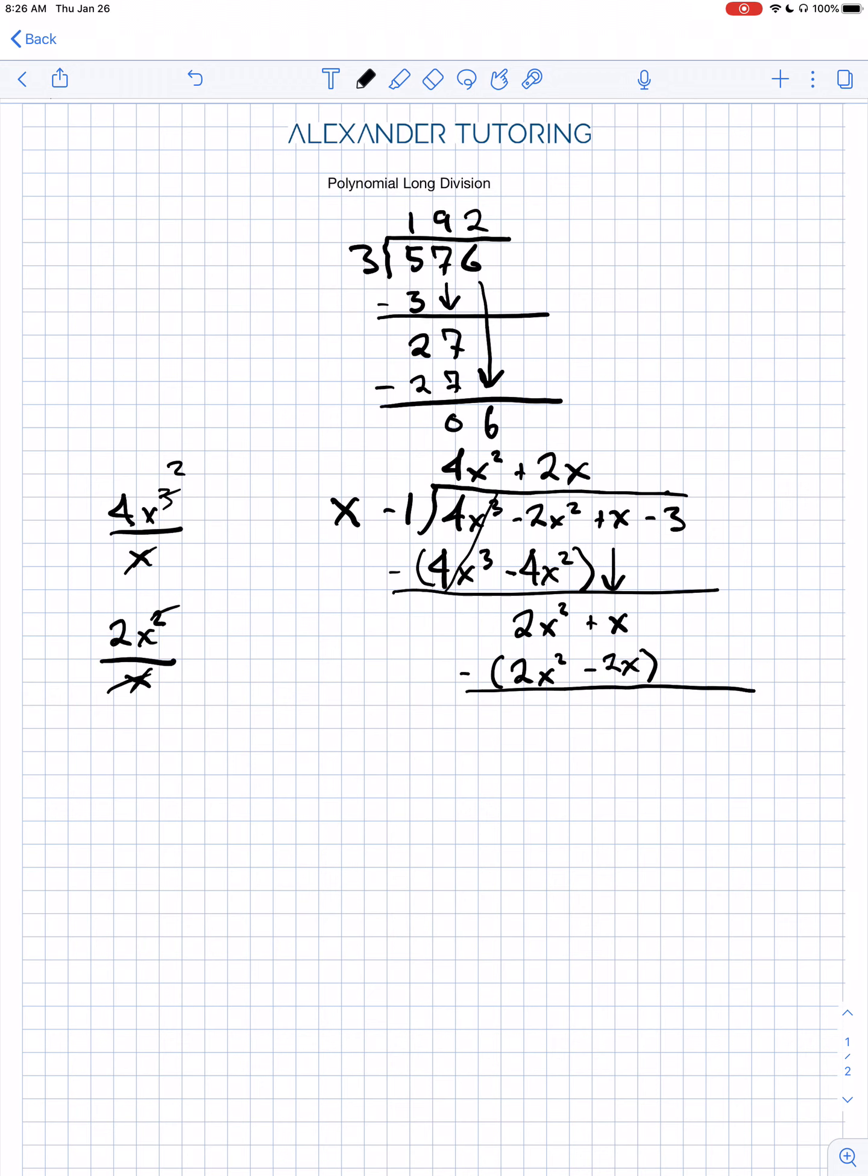so you'll know you're doing it right if these guys cancel out. And then we have x minus minus 2x, which is x plus 2x, which is 3x. Okay, and then we bring the next term down. And we start the process over again, looking at the leading terms.